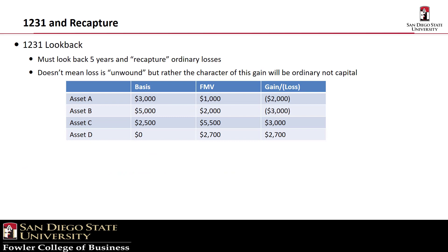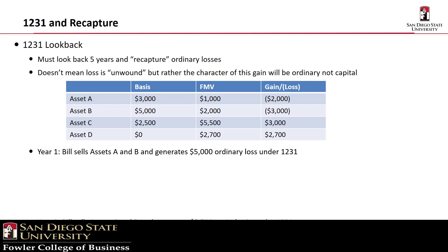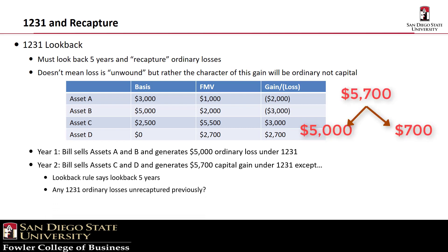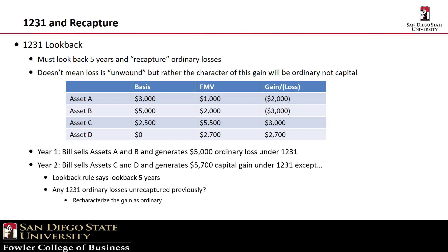Section 1231 includes a look-back rule that requires a taxpayer that has generated 1231 capital gains in a year to look back over the previous five years. If there were any Section 1231 ordinary losses, then this year's gains must be re-characterized as ordinary. Thus, in Bill's situation, in the second year when he sells all the gain property, he will have to look back and find the $5,000 of ordinary losses from last year. Therefore, he's going to have to re-characterize $5,000 of this year's gains as ordinary. The net result is an ordinary gain of $5,000 and a $700 capital gain. Remember, the total recognized gain of $5,700 does not change — only its character.